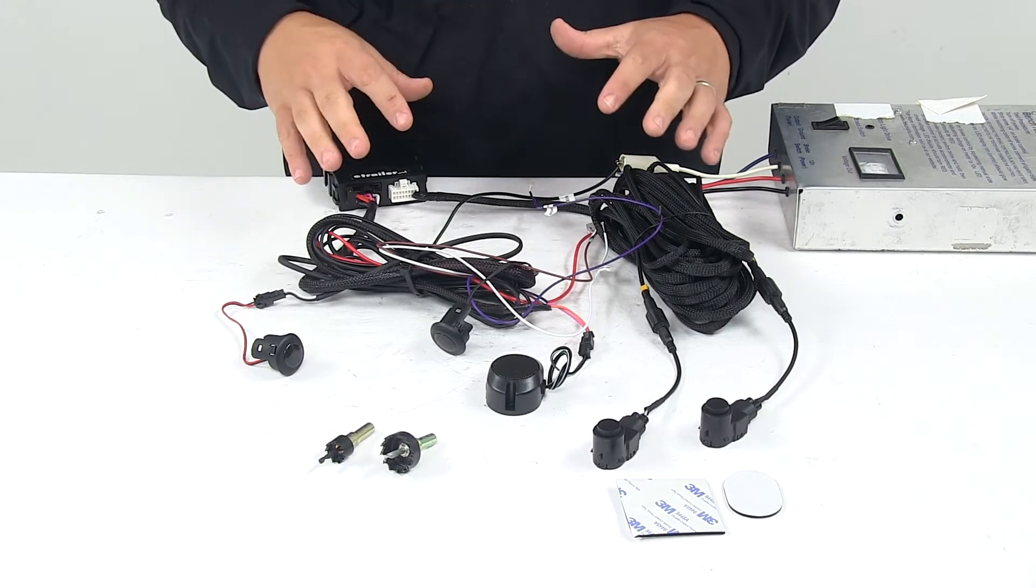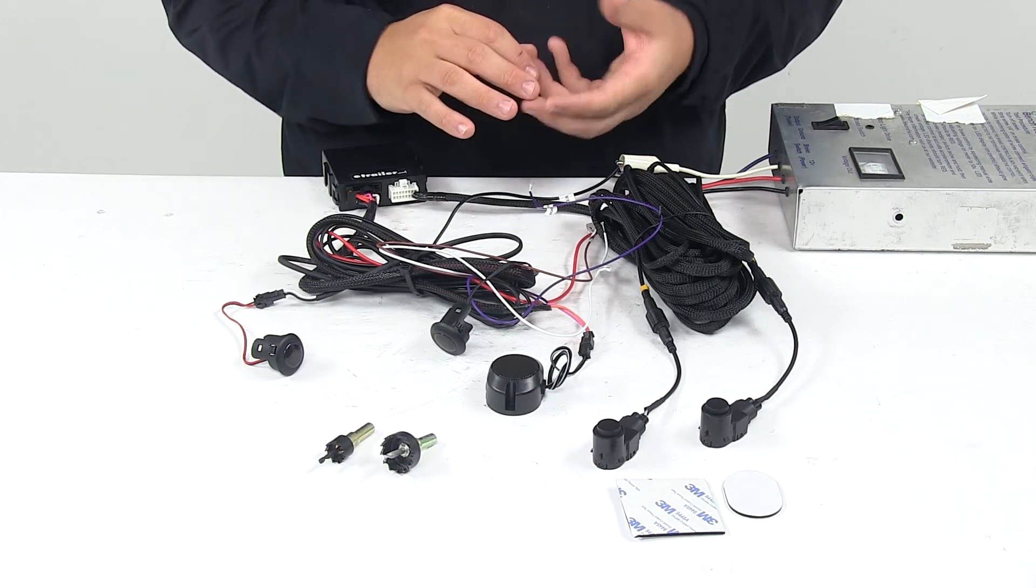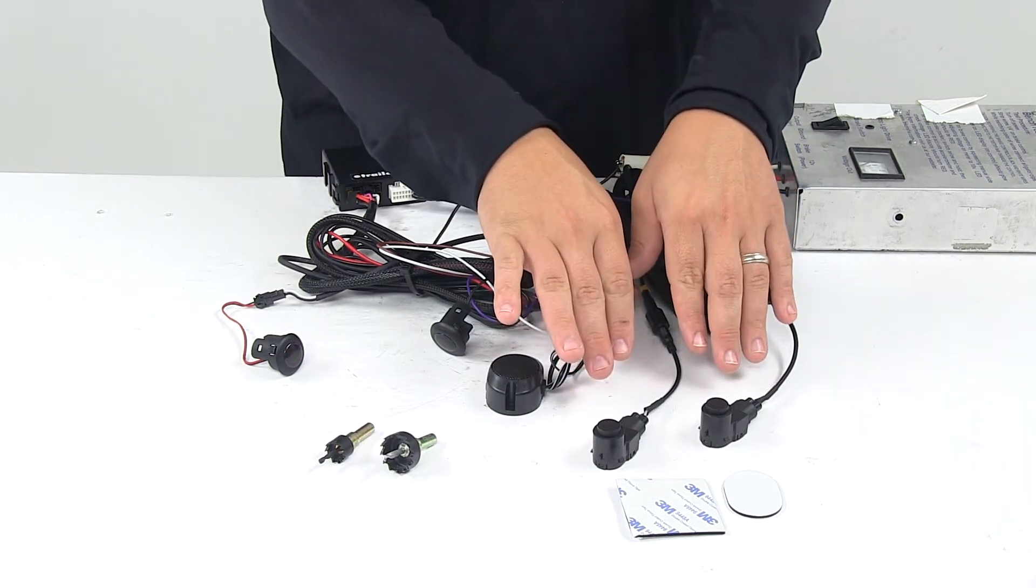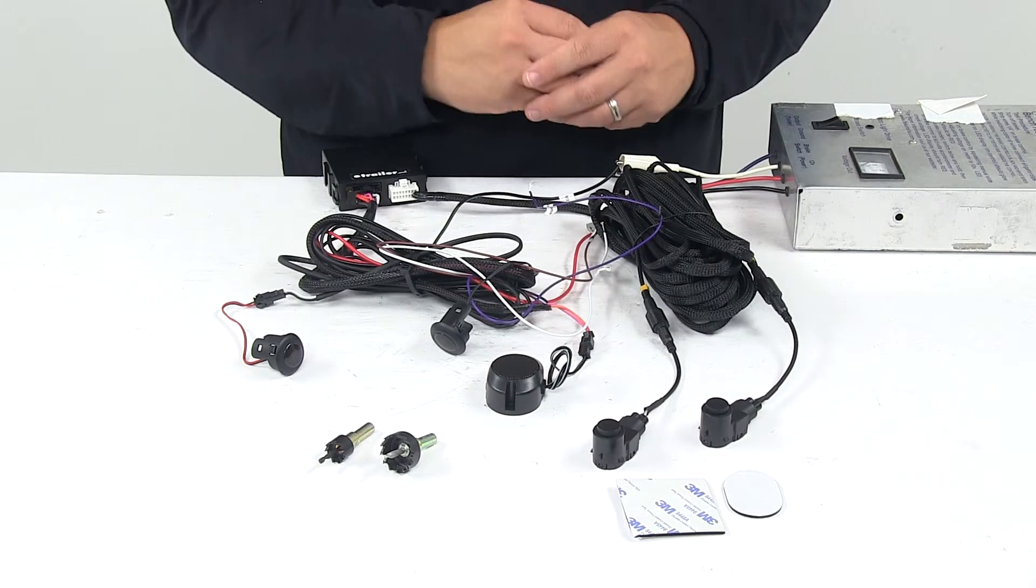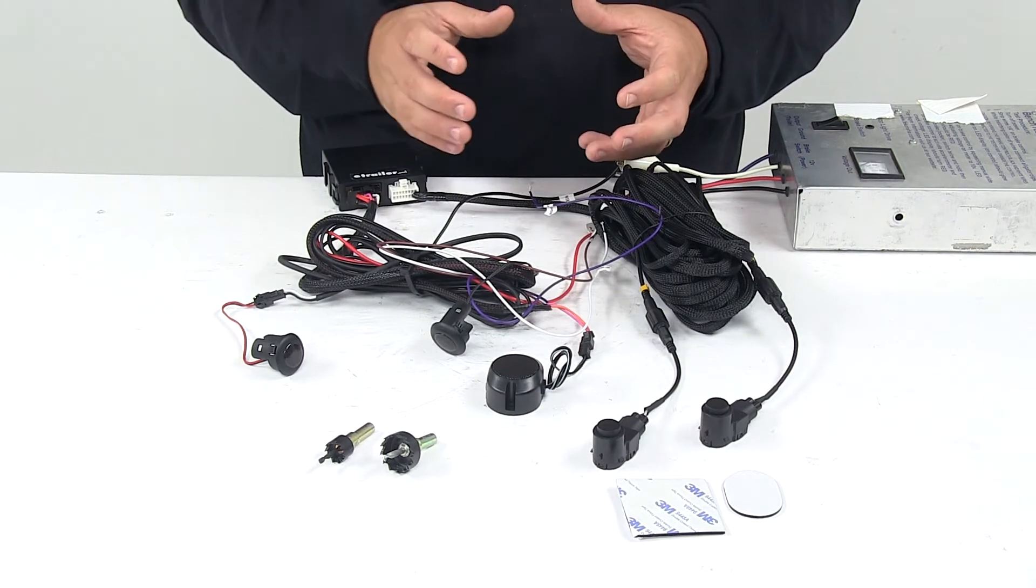With this kit you basically get two built-in alert systems. You have your sensors which mount to either side of your vehicle and then you also have your visual alerts.